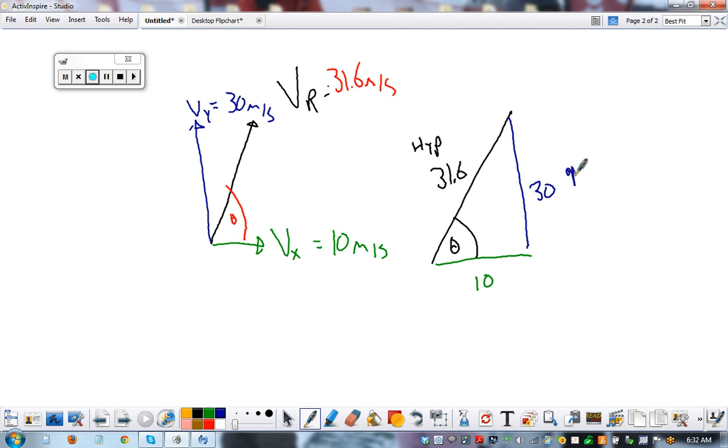This is the hypotenuse. This is the opposite side. It's opposite of the angle we want to find. The angle's here, the opposite's over here. This is the adjacent side. Adjacent means touching. It's touching. It's part of the angle that we want to solve for.